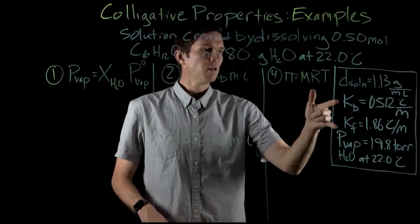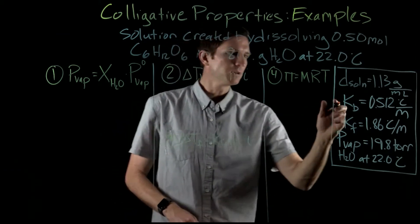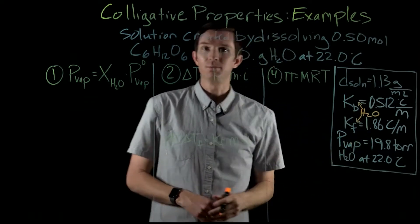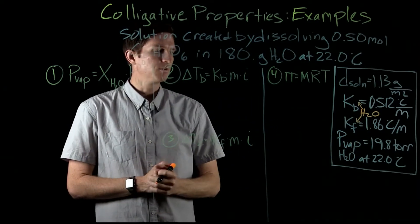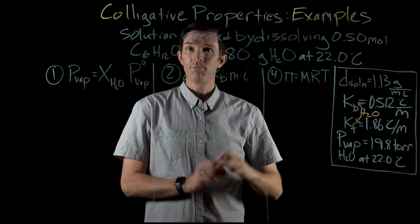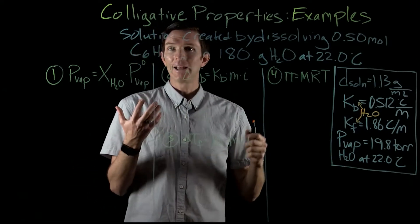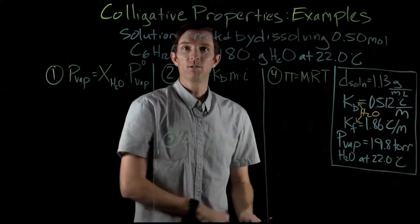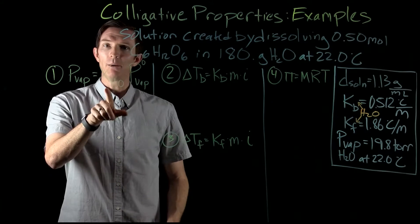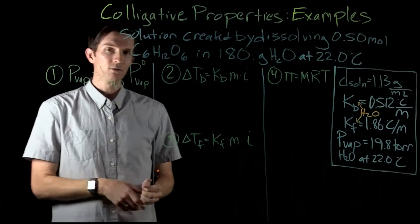We also know the Kb and Kf values specific to water, as a reminder, these are both for water because that is our solvent. The Kf and Kb values are relative to the solvent, and the vapor pressure of pure water at the same temperature is 19.8 Torr. So we want to look at how to calculate these different colligative properties. Let's start with vapor pressure — to calculate it, I just need to know the mole fraction and the vapor pressure of the pure solvent.